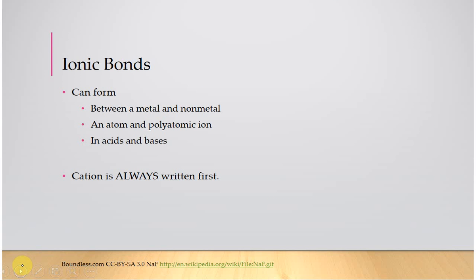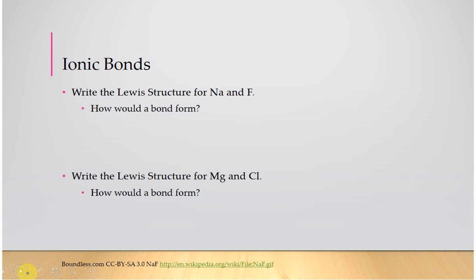So, ionic bonds form between a metal and a nonmetal or something with a polyatomic ion. Here it's going to be something like NaCl, metal, nonmetal, or HNO3, polyatomic ion and another atom. So, acids, bases, metal, nonmetal, anything with a polyatomic ion, these are all ionic compounds. For these, the cation is always written first. It's going to be the one that has the lowest electronegativity.